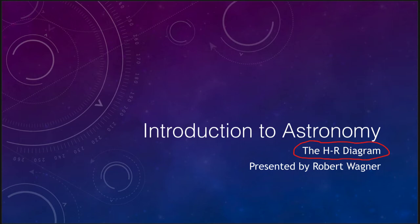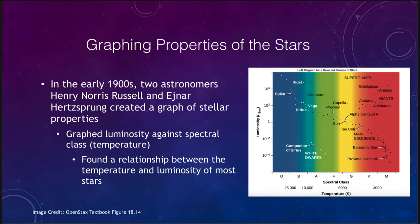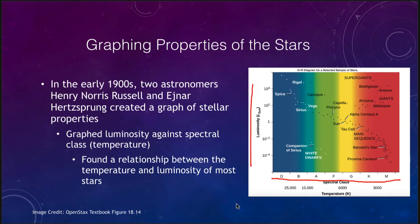The HR diagram is a way of organizing the stars. When we get a bunch of data, what astronomers and scientists in general like to do is plot it out by various properties and look for patterns. That is what happened in the early 1900s when astronomers Henry Norris Russell and Ejnar Hertzsprung took the properties of stars that had been catalogued and looked at the spectral class — the OBAFGKM spectral class — versus the magnitudes or luminosity of the stars.